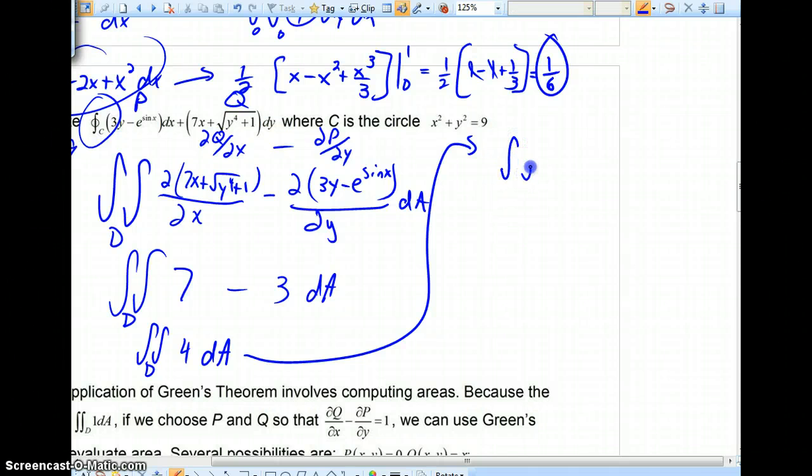Remember that we could have any X's substitute in R cosine theta, take any Y, substitute in R sine theta. And then in our integrand, DA, we can always convert to R DR D theta.